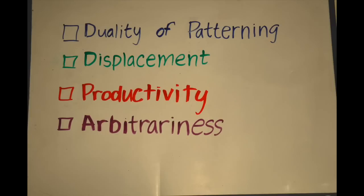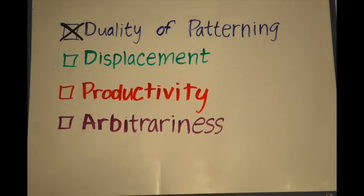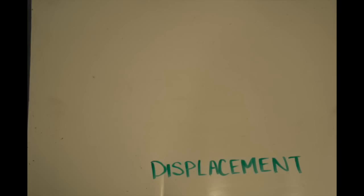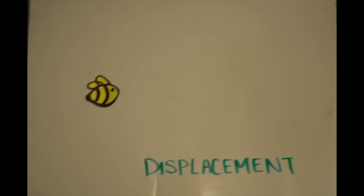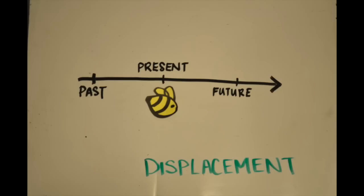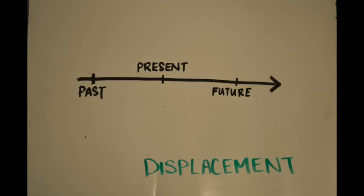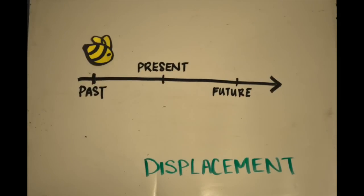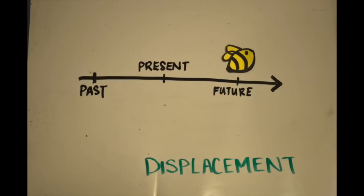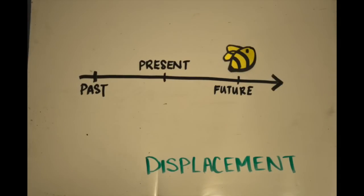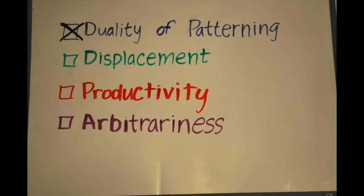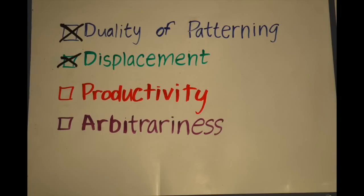So bee communication does not utilize duality of patterning. When bees communicate, they can tell other bees about a food source that they saw an hour ago, but they can't talk about one that they saw yesterday, or that they want to go back to tomorrow. This is because the waggle dance relies on the angle of the sun, which is always moving. Therefore, bees cannot communicate with displacement.